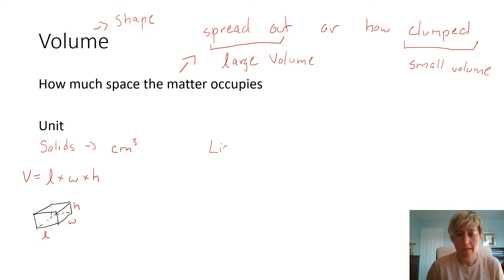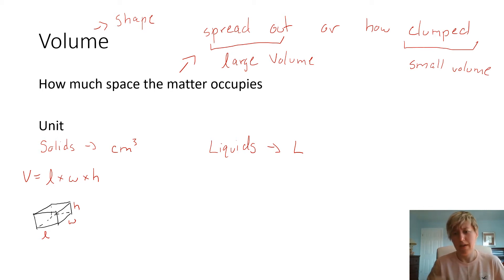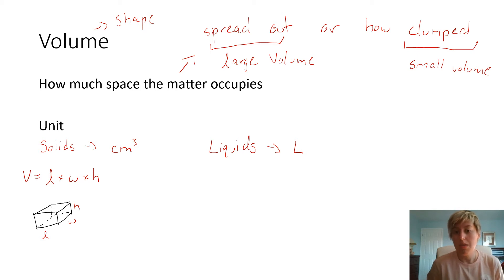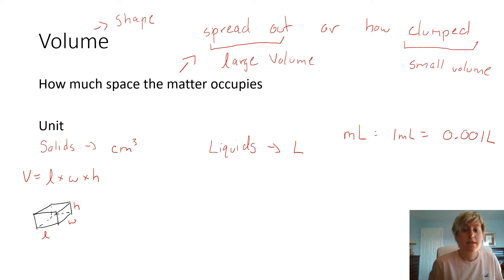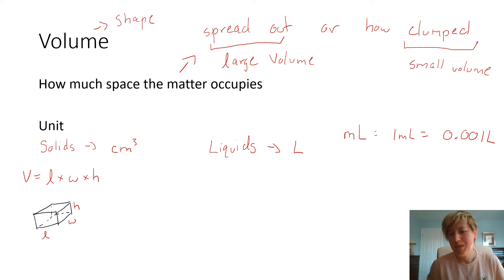For liquids, the unit is liters. Just like mass has prefixes, volume does too. If I have a very small amount of liquid, I use milliliters — one milliliter equals 0.001 liters. For very large volumes, there is the kiloliter, which is 1,000 liters, though it's not widely used.